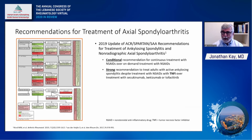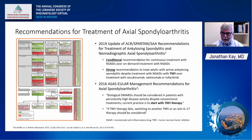For axial spondyloarthritis, the 2019 update of the ACR/SPARTAN/Spondylitis Association of America recommendations conditionally recommended continuous treatment with NSAIDs over on-demand treatment, and strongly recommended treating adults with active ankylosing spondylitis inadequately responsive to NSAIDs with TNF inhibitors over IL-17 inhibition or tofacitinib. The 2016 ASAS/EULAR management recommendations indicated that biologic DMARDs should be considered in patients with persistently high disease activity despite conventional treatments, starting with TNF inhibitors. So again, biologic agents are recommended for treatment of axial spondyloarthritis.